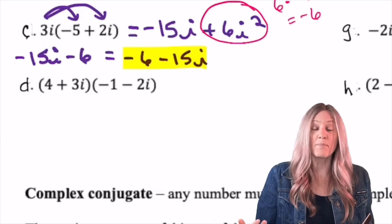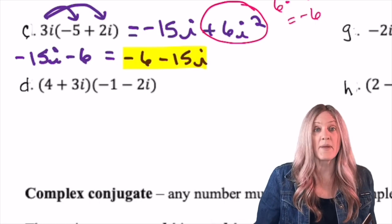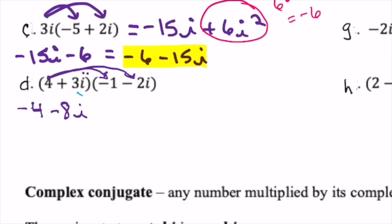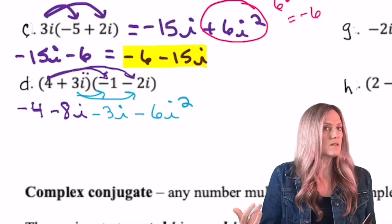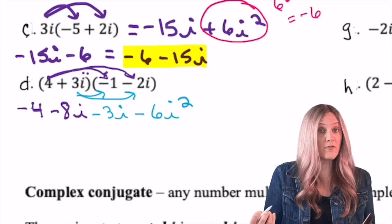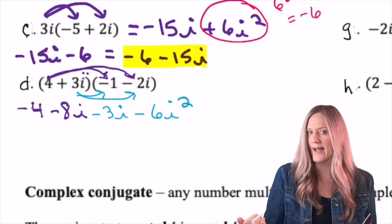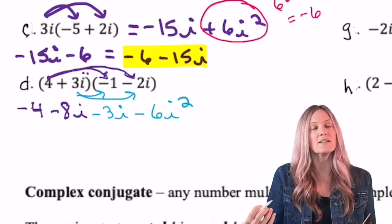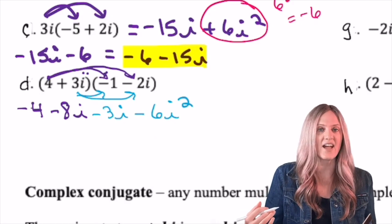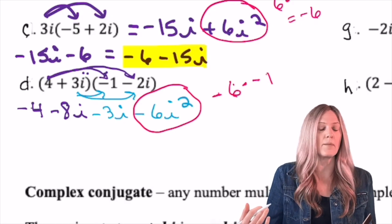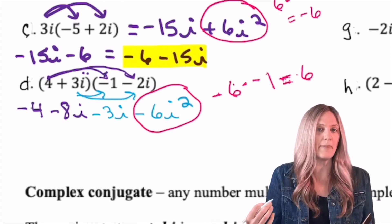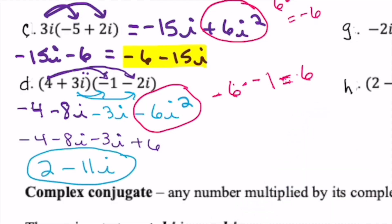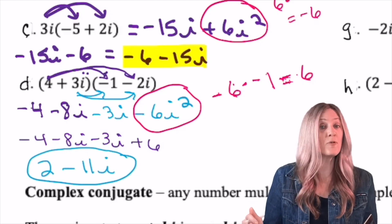Now we're just multiplying complex numbers again, but this time they're both binomials. Let's go ahead and expand. Be careful! This is a good time to make sure you distribute it correctly. So distributing the 4 into the second binomial, -4 - 8i, and then distributing the 3i into the second binomial, -3i - 6i². We already talked about the fact that we do not leave i² as one of our terms, so we need to simplify that. Negative 6 times negative 1. This now becomes plus 6. Then we have to combine like terms. Combine your real numbers. Combine your imaginary. Final answer, 2 - 11i. Remember the form is very important.